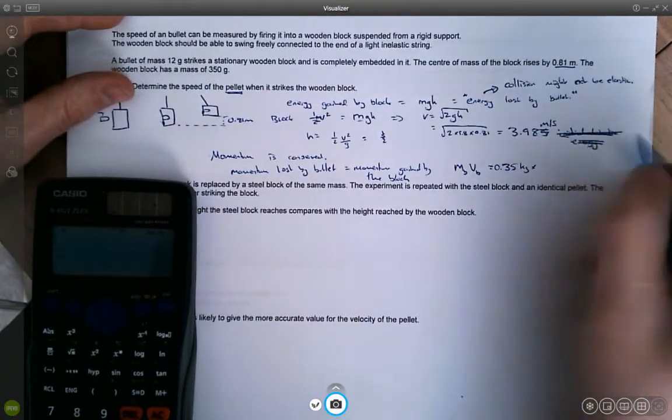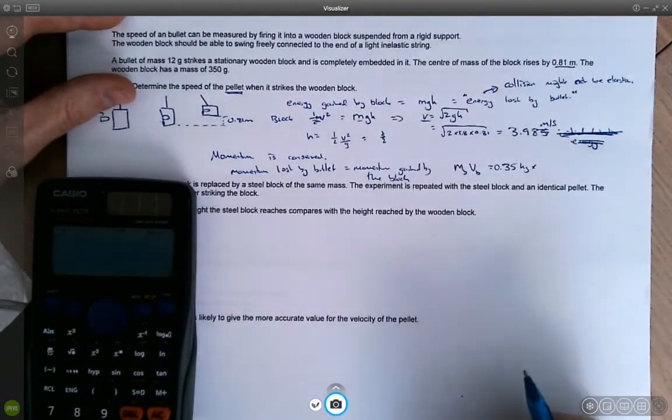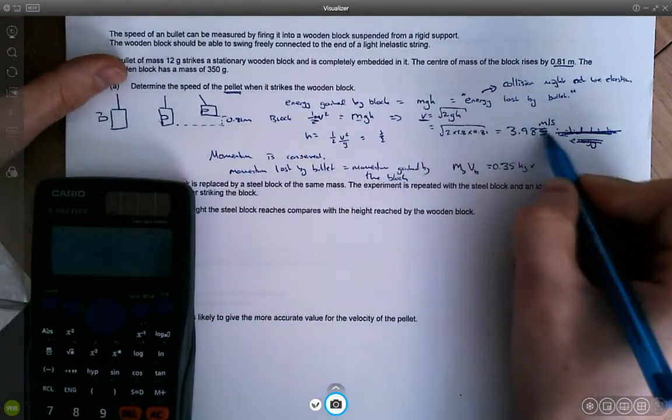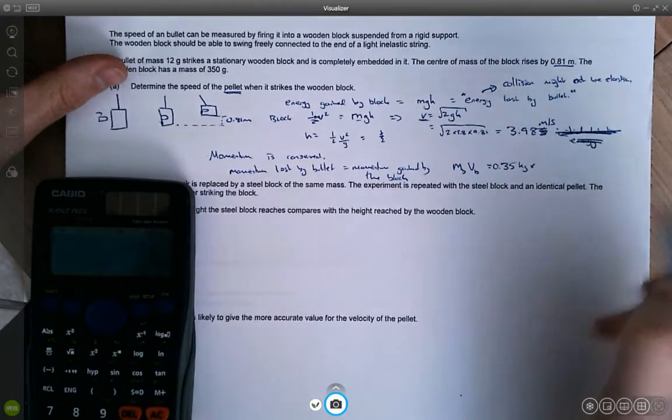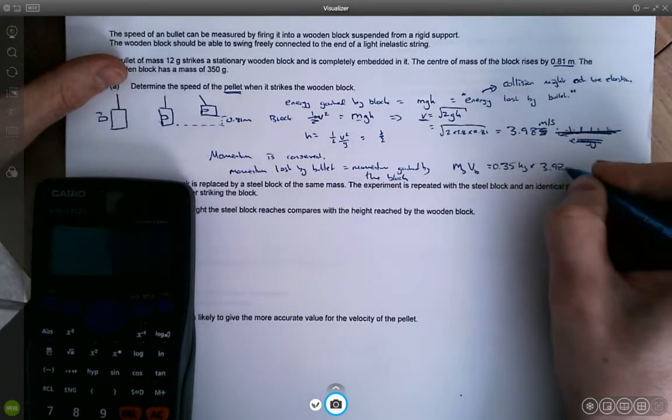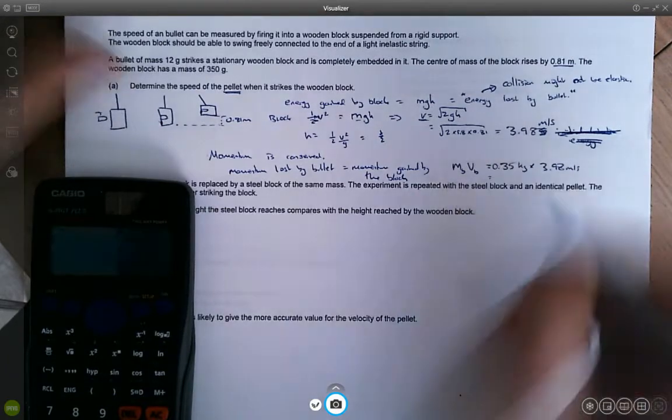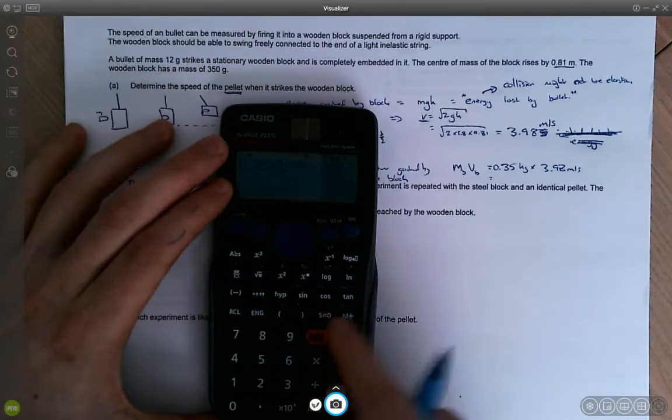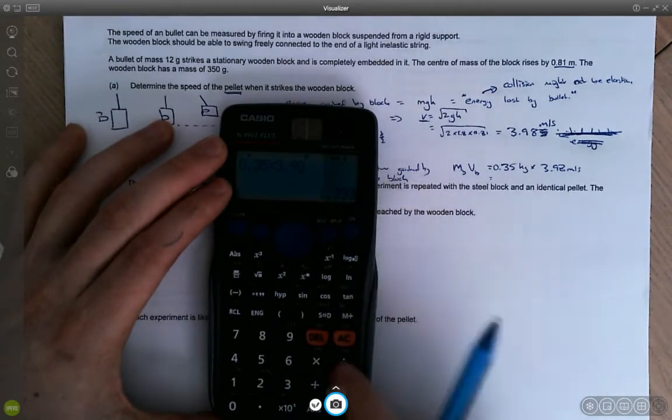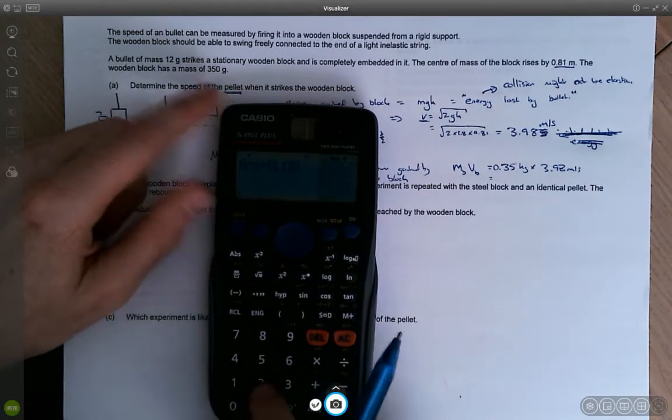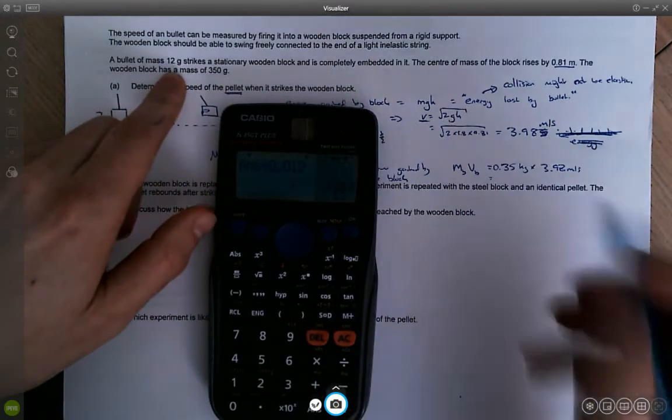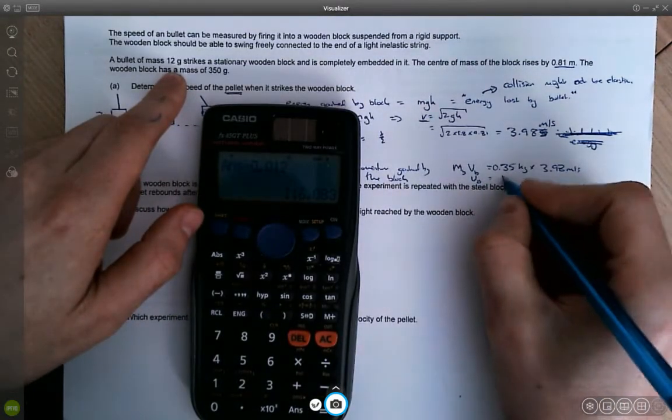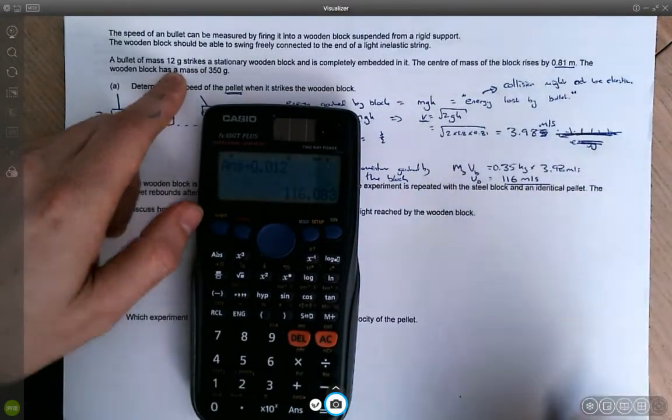I don't know, obviously, that's a very silly mistake, because this is velocity of the block. So this is an example of where, you know, if you show you're working clearly, it's easy to spot your mistakes. So times by 3.98 meters per second. So the momentum gained by the block is 1.39. We're going to divide that by the mass of the bullet, 0.012 kilograms. And we're going to find that the velocity of the bullet is 116 meters per second.